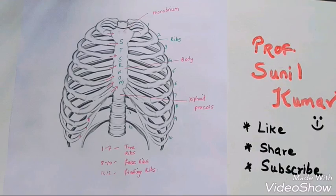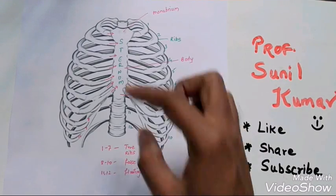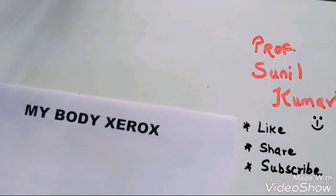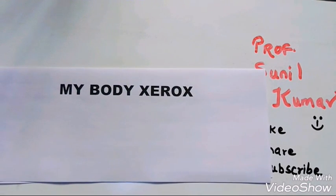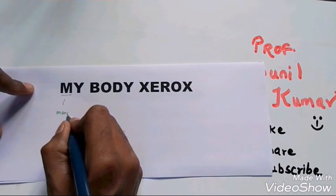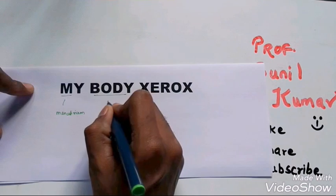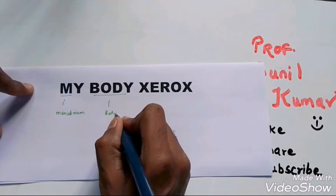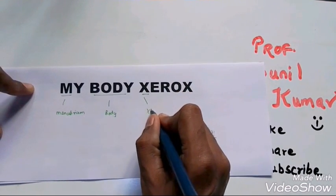So this is how you can remember your rib cage. The shortcut for rib cage is very simple, you just have to remember the sternum bone. I've given it in a very simple name: my body xerox. M stands for manubrium, B itself is body, and xerox X stands for xiphoid process.